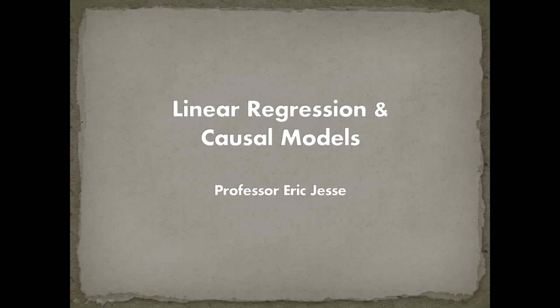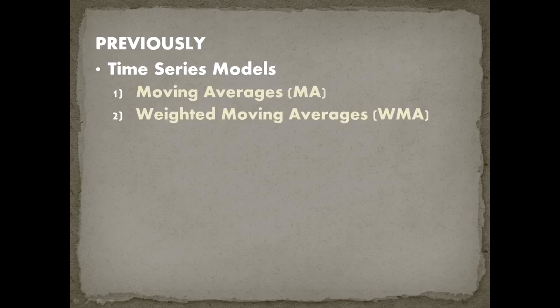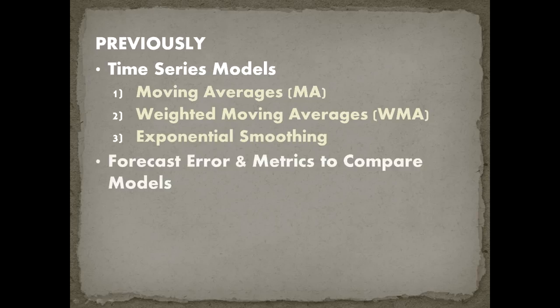Welcome back to Business Analytics for Decision Makers. Today we're going to cover linear regression and causal models. Earlier in this block we covered time series models: moving average models first, then weighted moving average models, and finally exponential smoothing. Once we had these models we developed what forecast error was and then metrics by which to compare different forecasting models.